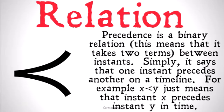Precedence is a binary relation, which means that it takes two terms — in this case, instants in time. Simply, it says that one instant precedes another on a timeline. For example, x precedes y just means that instant x precedes, or comes before, instant y in time.